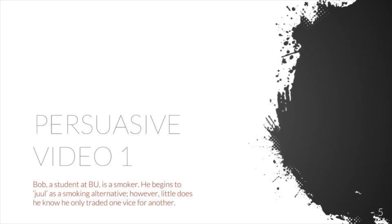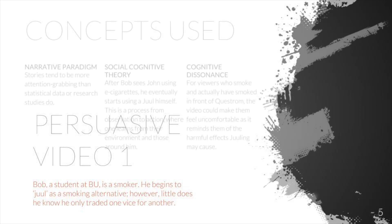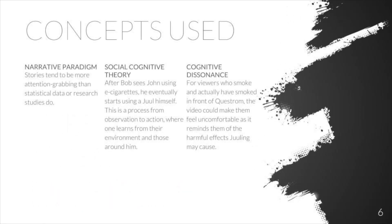For Video 1, we decided to use a story to make our key message more meaningful and impactful. By using the narrative paradigm, we want to create a stronger impression for the audience, as stories tend to be more attention-grabbing than statistical data or research studies. For example, the story's character, Bob, represents a typical BU student so that a BU student can find Bob's story relatable.